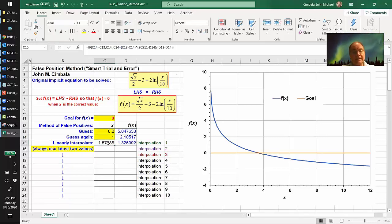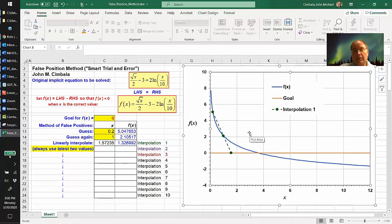For the next one, instead of just guessing something else, I use linear interpolation. I describe linear interpolation in a separate video tutorial if you're not familiar with that. Calculate f of X at this value of X. Graphically, I have my first two points and then I extrapolate to the zero case, the goal, and get a new X. That's this X here. And now I have a new f of X at this new X.